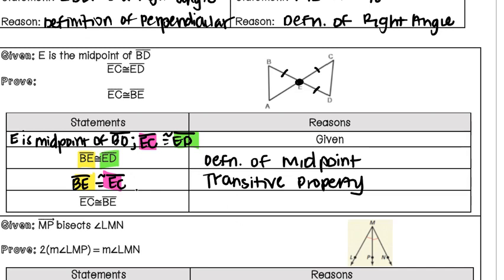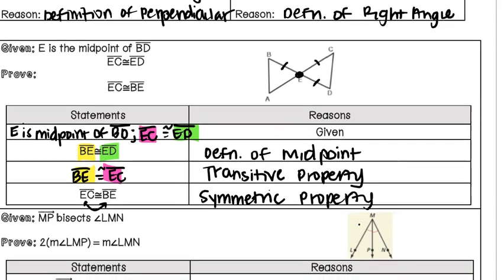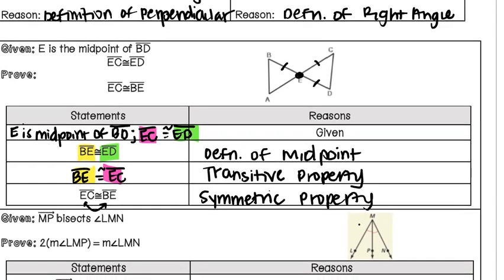In the last line, all that happened was the order was switched. So this is just our symmetric property of equality. Remember, we're allowed to rewrite the order of things to show that measures are equal on either side.